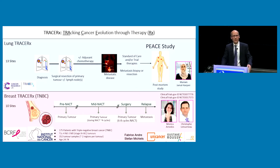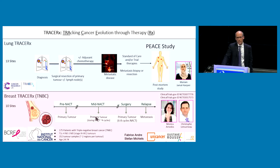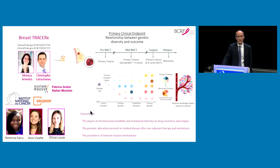On that basis, we set up with colleagues Monica Arnidas, Christopher Letourneau, Fabrice André, and Stéphane Michels at Gustave Roussy, UniCancer, and Institut Curie, the Breast TRACERx study, building on our understanding of cancer evolution from our studies in Lung TRACERx. Breast TRACERx spans 10 sites in France; 175 patients have been recruited with triple negative breast cancer with early stage tumors, and we have a median of about two regions per tumor. Today I'm presenting early results in the pre-neoadjuvant chemotherapy setting of the multi-region sequencing analysis of the primary tumors, and how that's given us insights into immune evasion and clonal evolution.